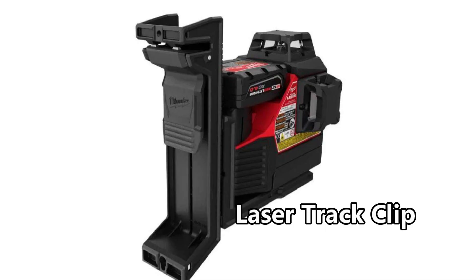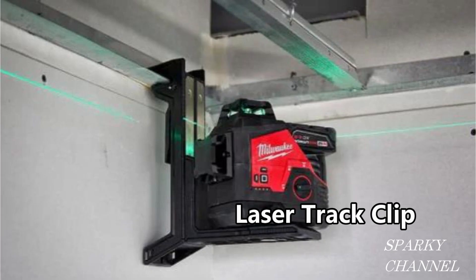Milwaukee also has a couple of accessories that you can use to move your laser around. This one is called the laser track clip. And there's a little groove there where you can move the laser up and down. And then you can use that L bracket to go side to side. So this is an accessory and it costs about $25.